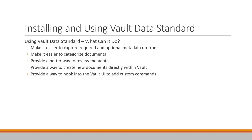Putting a document into a category in Vault conveys a lot of behavior onto it — lifecycle, revision schemes, associated properties, and required properties. You can set up rules to auto-categorize by file extension, but if you have multiple categories for parts — like purchased, made, and standard — you need the correct property upfront to categorize properly. Without that, you may have to change category manually, forget to do it, or pick the wrong one. The data standard lets you categorize right up front.